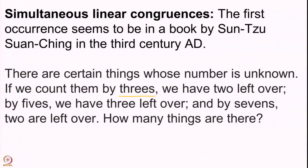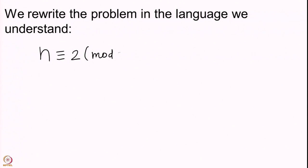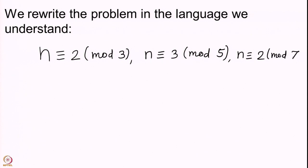We convert this problem into the language we understand. When you count by 3, 2 are left over: n ≡ 2 mod 3. When you count by 5, 3 are left over: n ≡ 3 mod 5. When you count by 7, 2 are left over: n ≡ 2 mod 7. So the problem in our language is: find n such that n ≡ 2 mod 3, n ≡ 3 mod 5, and n ≡ 2 mod 7. Sun Tzu asks: what is n?